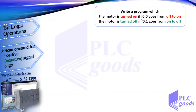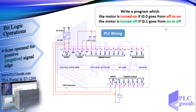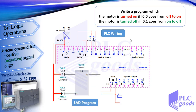Let's write a program which turns on a motor when I0.0 goes from off to on, and turns it off when I0.1 goes from on to off. We've written a motor program before, but now we want it to work based on changes in pushbutton states. This is my program with an SR flip-flop. To set the output, I use the instruction which scans I0.0 for a positive signal edge.